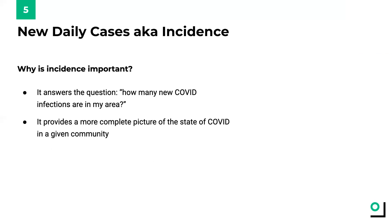Why is incidence important? It answers the question: how many new COVID infections are in my area? In doing so, it provides a more complete picture of the state of COVID in a given state or county. As incidence increases, so does the risk that you'll run into an infected individual in your community. Incidence is also important because it drives future hospitalizations and deaths. A higher level of incidence today typically means that you can expect to be filling more ICU beds within a few weeks, and unfortunately, more deaths will normally follow a few weeks after that.